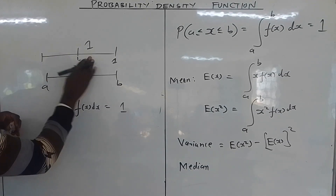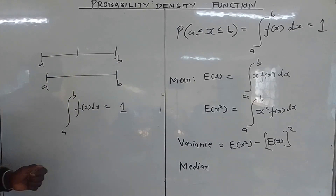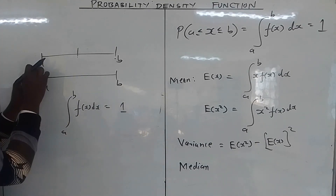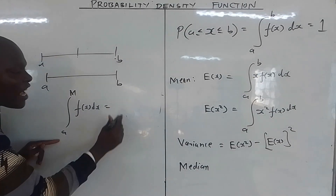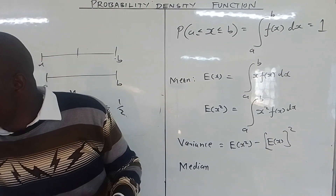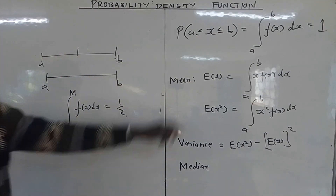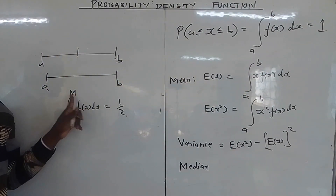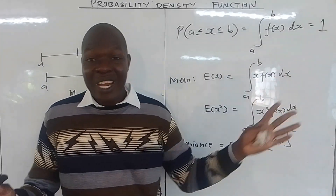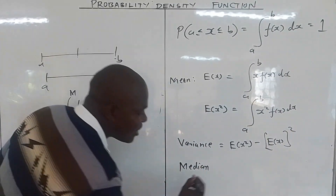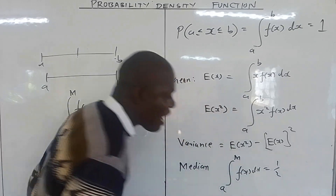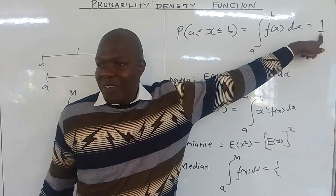If you integrate the whole probability density function you are supposed to get one. So for us to reach the median, we integrate from a up to the median value and we are supposed to get one half, because the median gives us halfway. So for you to get the median, you integrate from the lower limit up to the median value of f(x) dx and you get one half. If you integrate from the lower to the upper limit you get the full probability measure of one.